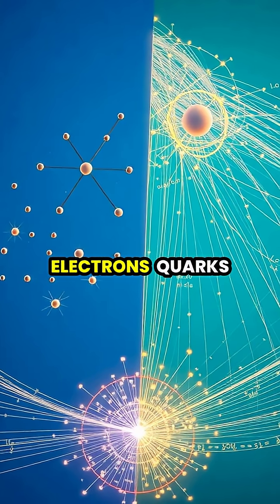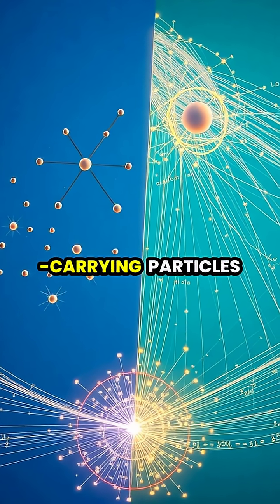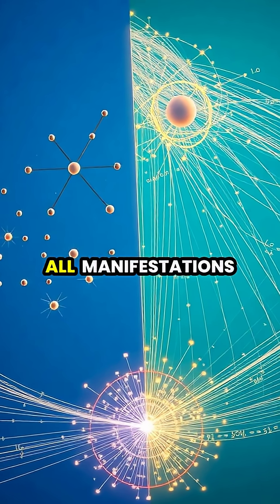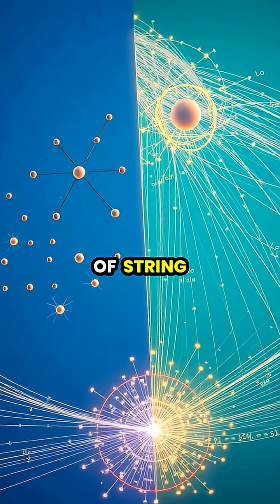While standard physics treats electrons, quarks, and force-carrying particles as distinct entities, string theory elegantly suggests they're all manifestations of the same type of string, just vibrating differently.